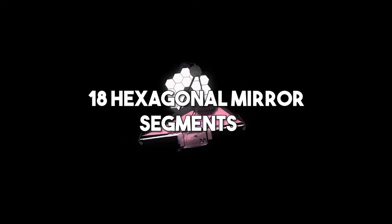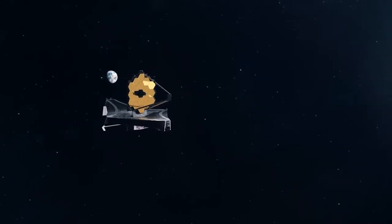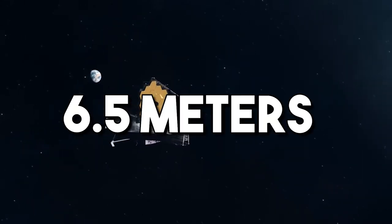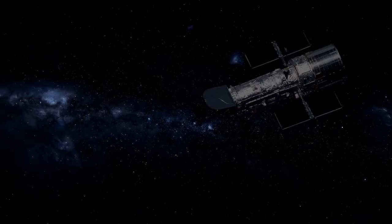The telescope has a primary mirror made of 18 hexagonal mirror segments, each of which is made of gold-plated beryllium. The primary mirror has a diameter of 6.5 meters, making it nearly three times as large as the Hubble telescope's mirror.